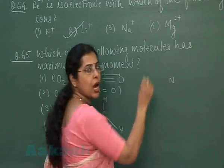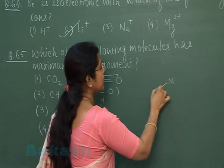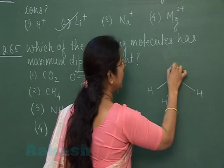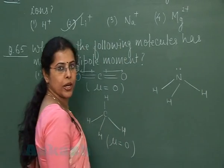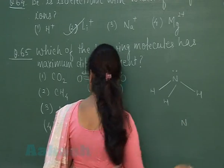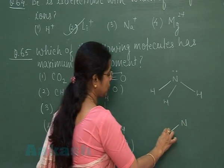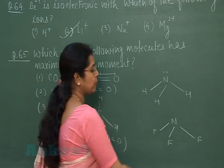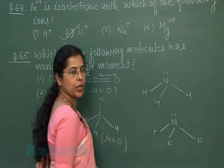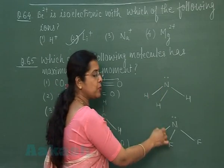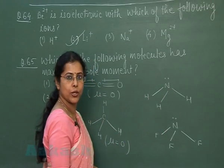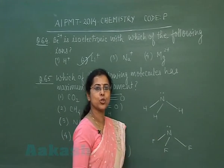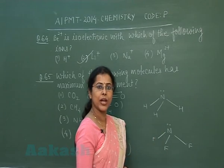The third option is ammonia (NH₃), a pyramidal molecule containing three bond pairs and one lone pair. The fourth option is NF₃, which is also pyramidal having three bond pairs and one lone pair. Both molecules are polar, and we have to decide which one has more dipole moment.